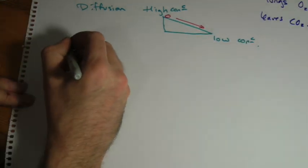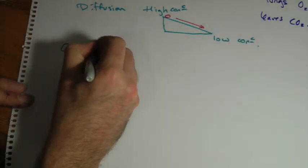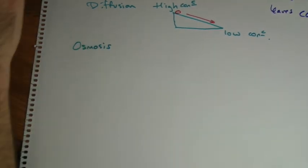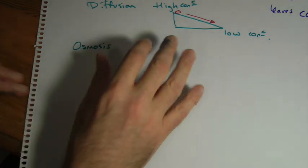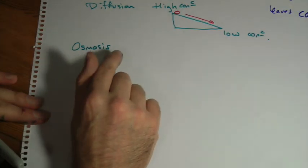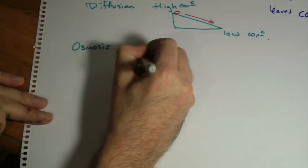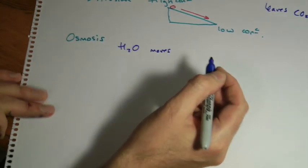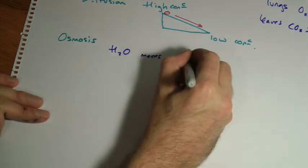We'll do osmosis next, which is a particular case of diffusion. It tends to be quite difficult questions. The simple way to think of it, as simple as you can get it, is that water, and you're always thinking about water when you do osmosis, moves towards wherever it is more concentrated.